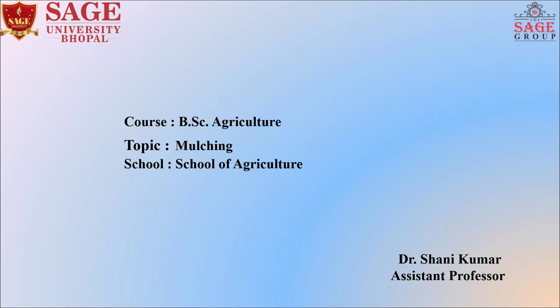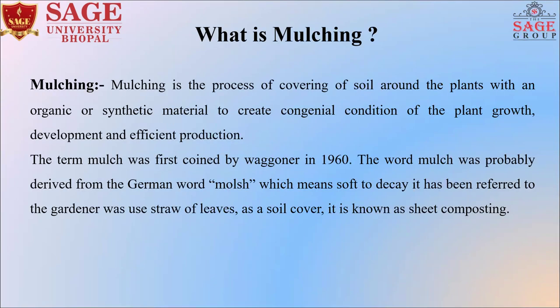In today's video lecture, we will discuss about mulching. What is mulching? Mulching is the process of covering of soil around the plant with organic or synthetic materials to create congenial conditions of plant growth, development, and efficient production. The term mulch was first coined by Wagner in 1960. The word mulch was probably derived from the German word mulch, which means soft to decay.